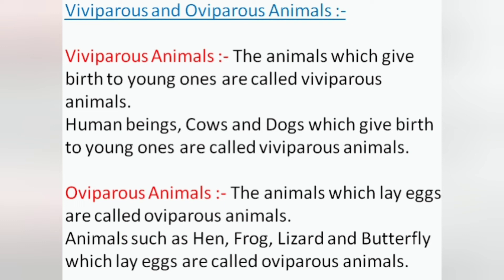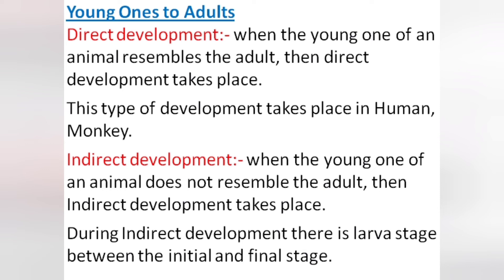Now we will study how organisms grow. There are mainly two ways to convert from young ones into adults: direct development and indirect development. In direct development, when the young one of an animal resembles the adult, there is no larva stage. This type of development takes place in humans, monkeys and all mammals — mammals being animals which give birth directly to young ones. Since all human beings look similar to each other, we can say that there is direct development in human beings.